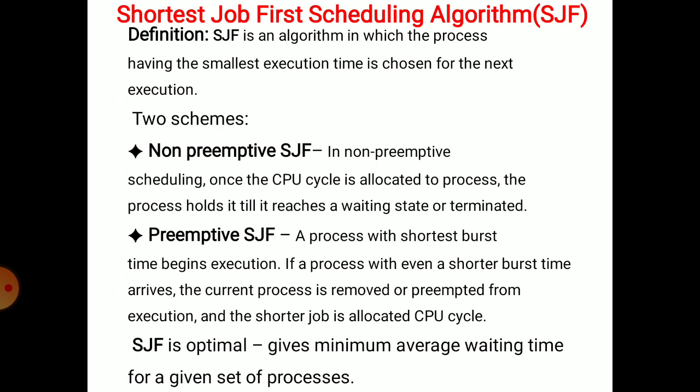For example, if two processes are there, P1 and P2. P1 arrives at 0 with CPU time required 7ms, and P2 arrives at 1 with CPU time required 4ms. Initially, at CPU time 0, only one process resides in the queue, so that is P1, and it will be selected for scheduling.